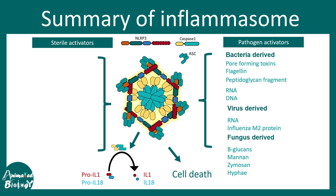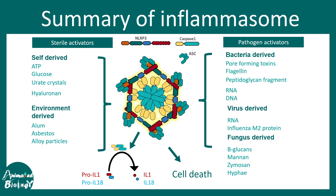There are also sterile activators, which are non-biological. These can come from inside the cell, like ATP, glucose, urate crystals, or hyaluronan — cellular subcomponents or byproducts. Additionally, environment-derived components can trigger inflammasome activation, such as alum, asbestos dust, or alloy particles in the air. That is why air pollution has huge potential to evoke inflammation in the lungs. The modest consequence is activation of inflammatory cytokines leading to inflammation, while the extremist outcome is cell death associated with very high levels of inflammation.